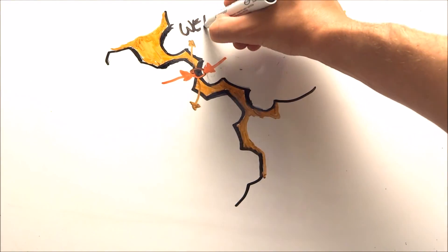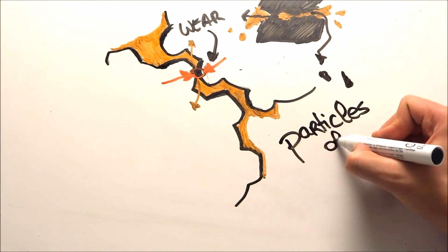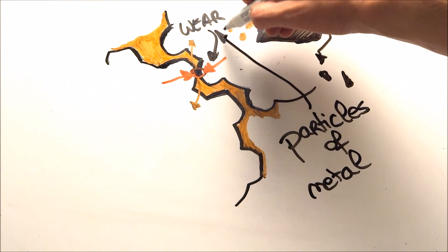But of course, if the viscosity is too high, it will slow down the movement of the gears, and the system will consume too much energy. The choice of viscosity is therefore a compromise. It has to be chosen carefully.